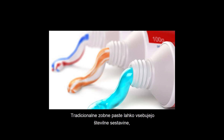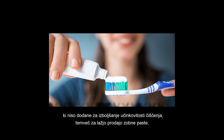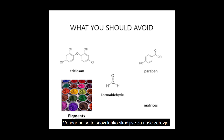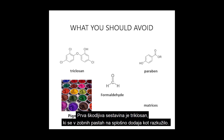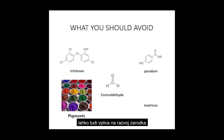Traditional toothpaste can contain numerous ingredients that aren't added to improve the cream's effectiveness but so that the toothpaste can be sold more easily. However, these substances can be harmful for our health. Here we have listed five ingredients that you should avoid. The first harmful ingredient is triclosan, which is normally added to toothpaste as a disinfectant. It can cause disturbances in the hormonal system or muscle function, and it can affect embryonic development.